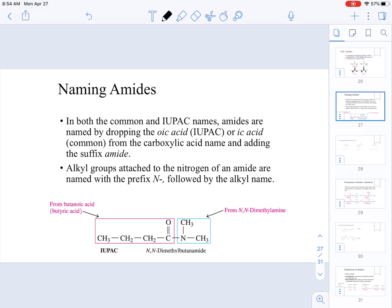The first thing that we're going to do is the naming of amides. In both common and IUPAC names, amides are named by dropping the oic acid, or ick acid for the common name. And then you're going to add the suffix amide. Another way that you can do it is writing the alkane name, erasing the E, and putting amide.